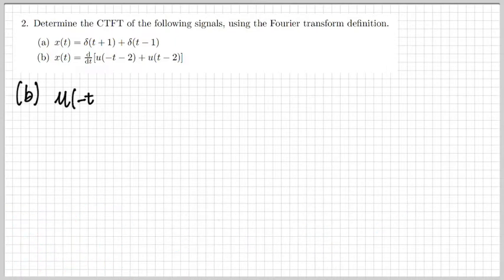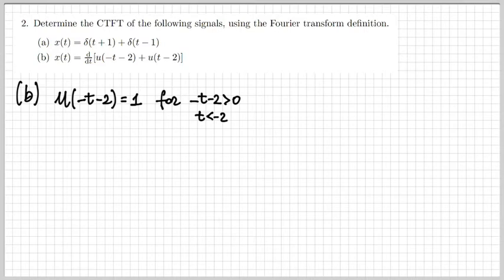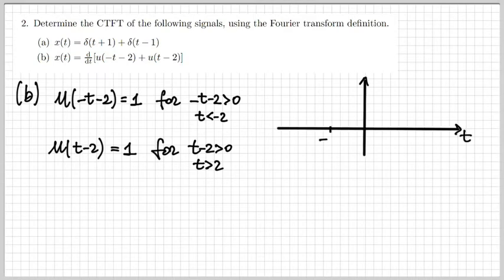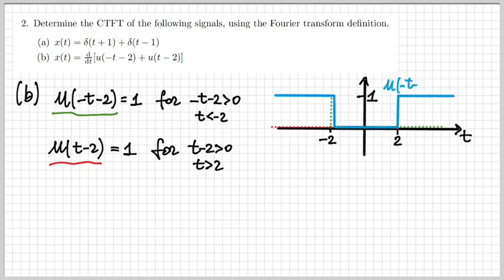For part B, x of t is expressed as the derivative of the sum of two step functions. The first step function is U of minus t minus 2, which is one when t is smaller than minus 2. The second one is non-zero when t is larger than 2. I draw the first one in green and the second one in red. When we sum them up, we get the result in light blue. The signal x of t is defined as the derivative of that.